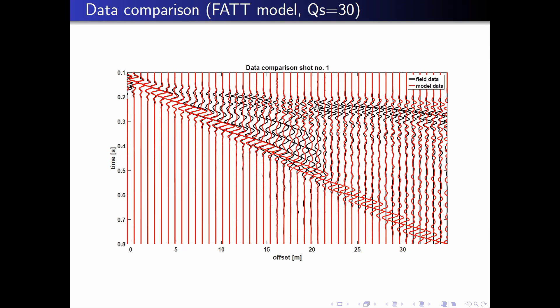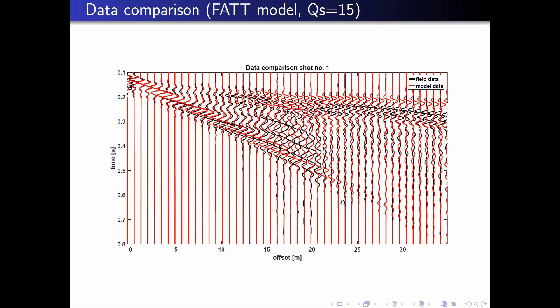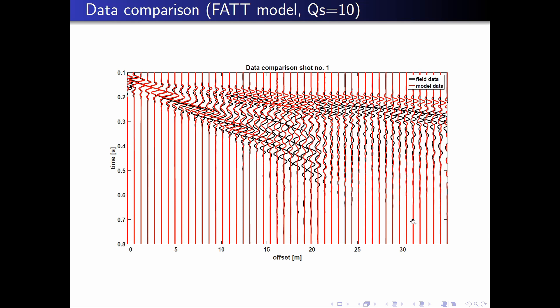If we approximate the viscoelastic properties by a homogeneous half space with a constant quality factor Qs of about 30, the first arrival waveforms start to appear, while the Love waveform amplitude is still too strong after passing the canal. Reducing Qs to 15, the modeled first arrival waveform fits the field data quite nicely in amplitude and phase. Decreasing Qs further to 10, the Love waveform damping after passing the canal seems almost perfect.